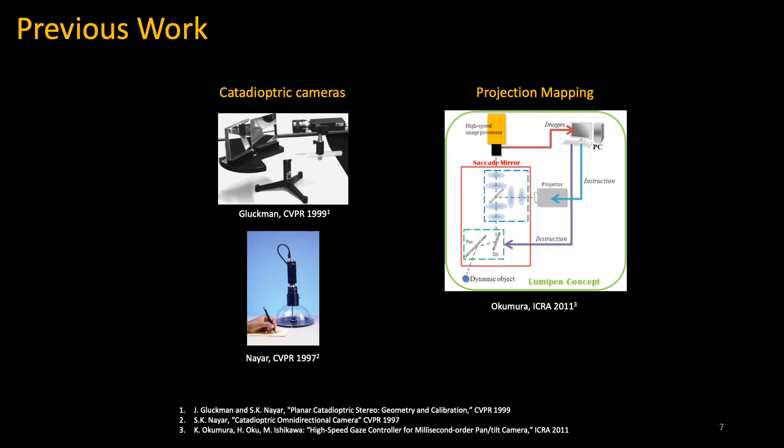In the right image, the authors build a dynamic projection mapping system, and this uses one-dimensional galvo mirrors to track a single object. Our work differs from this in that we use a single mirror and we develop a robust control algorithm to update the mirror to track multiple objects in the scene.